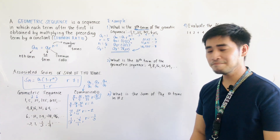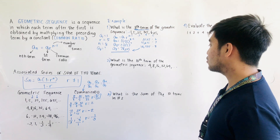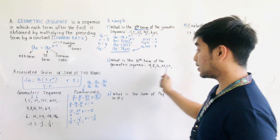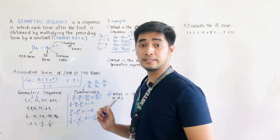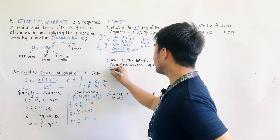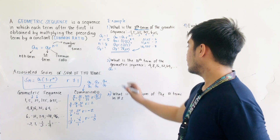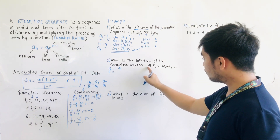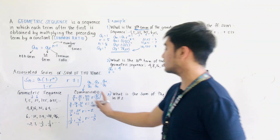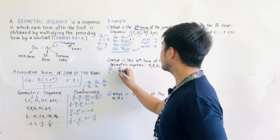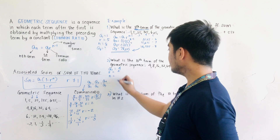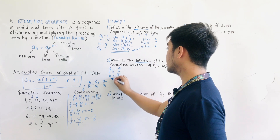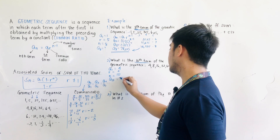For example 2: What is the 10th term of the geometric sequence 4, 8, 16, 32, 64? We write the given: A1 is 4, R is 8 divided by 4 equals 2, and N equals 10. We are asked to find A10.